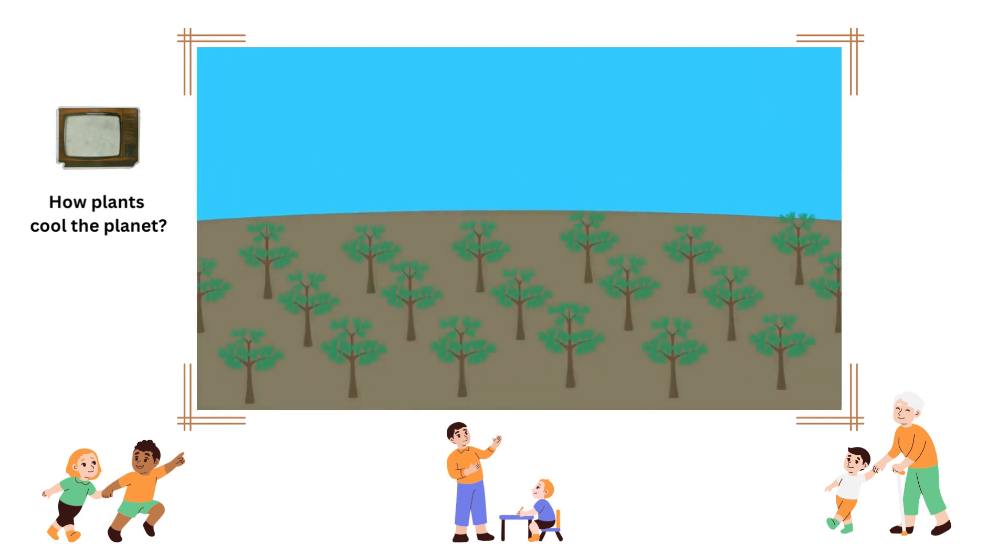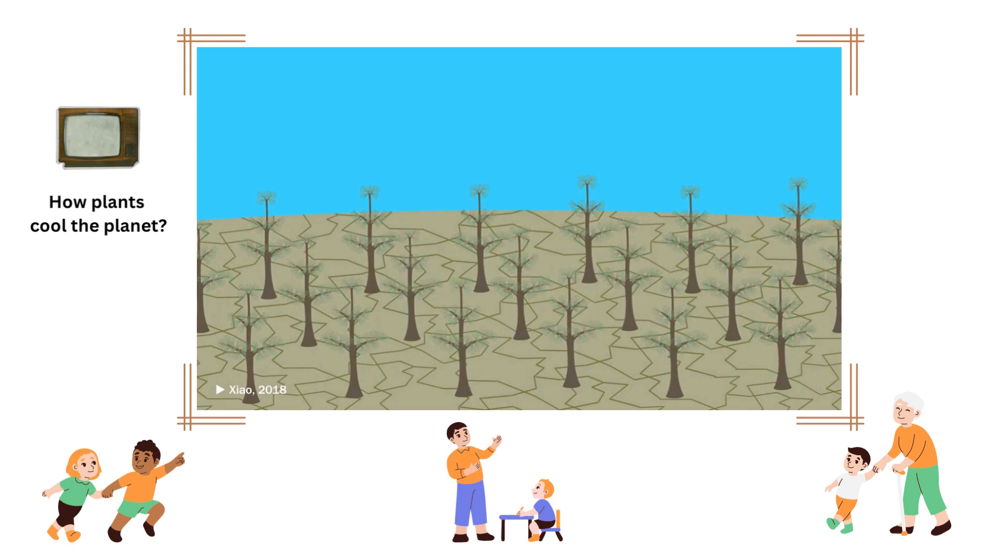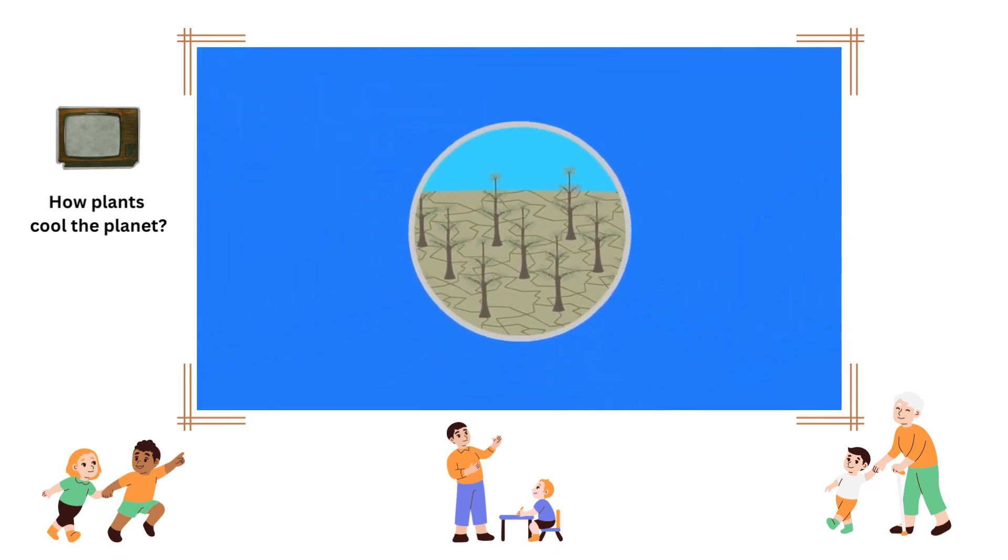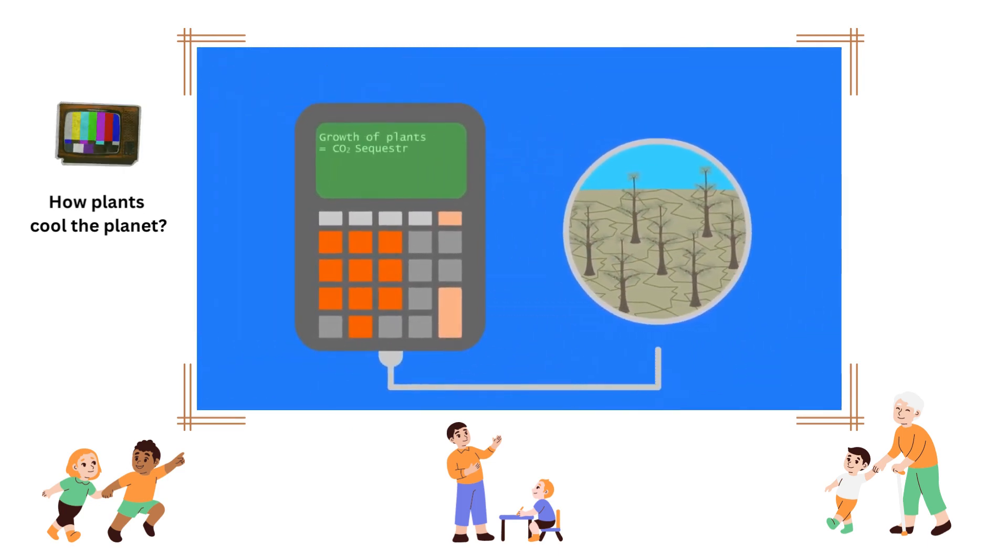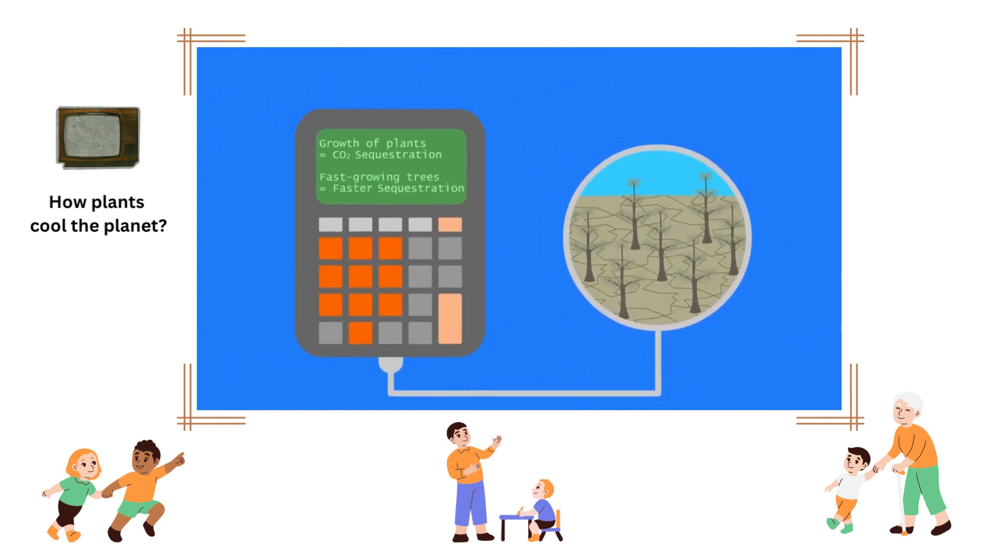For example, when fast-growing trees suck up the available water and die, leaving the land a desert. That kind of thing often happens when we use carbon calculations to guide ecosystem regeneration. We have to think holistically.